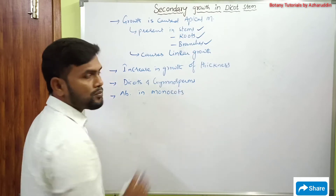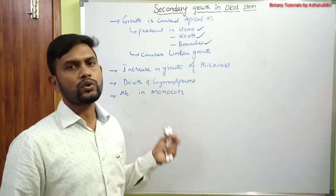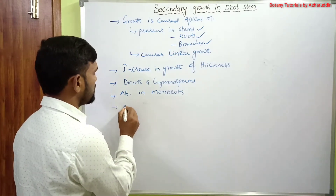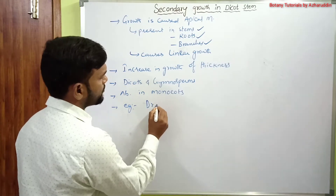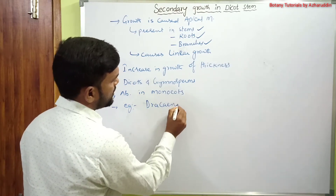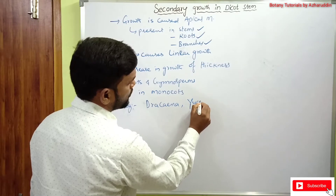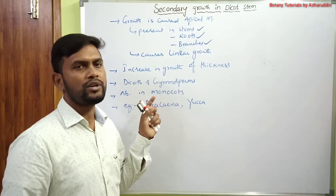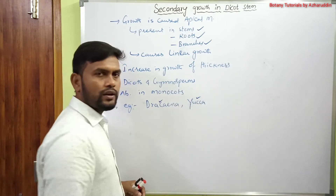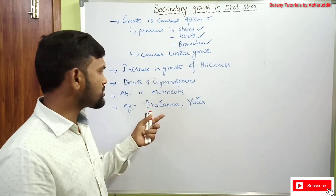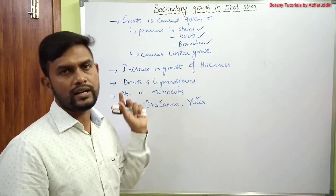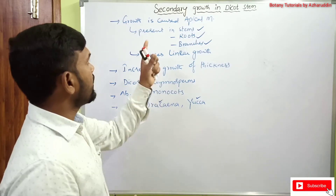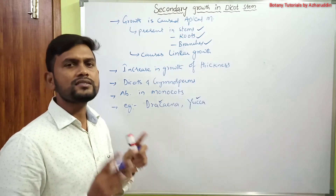Secondary growth is absent in monocots. However, exceptionally, some monocot genera show secondary growth in an anomalous way. Examples of anomalous secondary growth are Dracaena and Yucca. These plants belong to monocots but show secondary growth in an anomalous way.